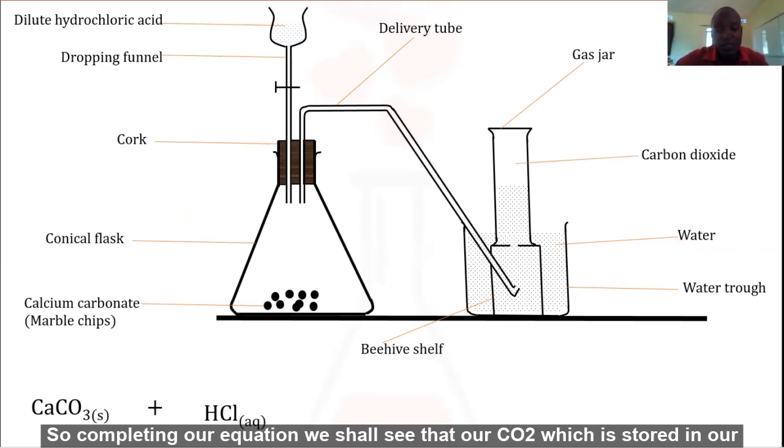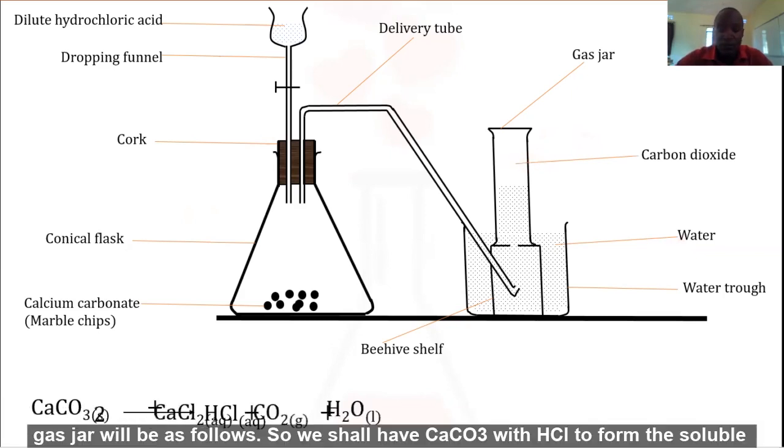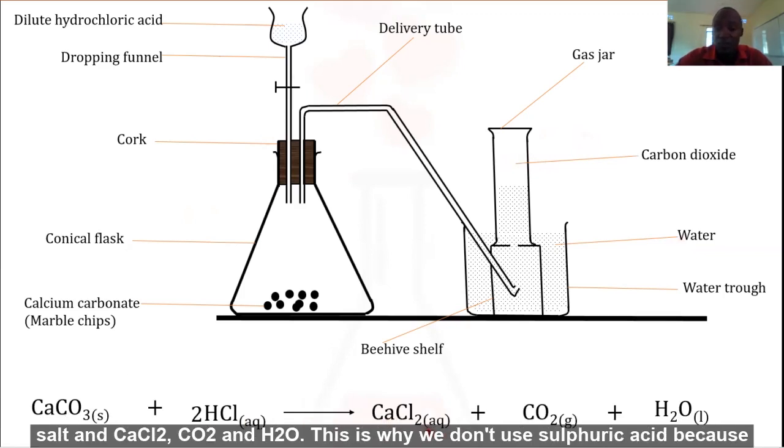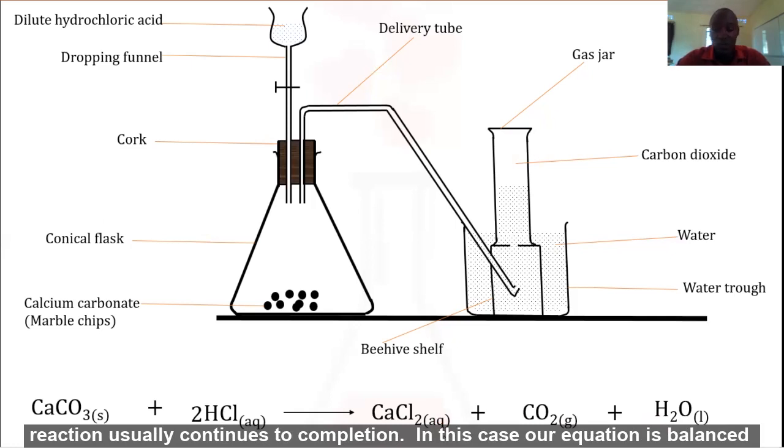Completing our equation, we shall see that our carbon dioxide is stored in our gas jar. We shall have calcium carbonate with hydrochloric acid to form the soluble salt calcium chloride, carbon dioxide, and water. This is why we don't use sulfuric acid because here we could have formed an insoluble salt. But this one is soluble, so the reaction usually continues to completion.